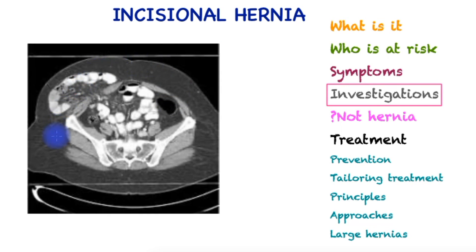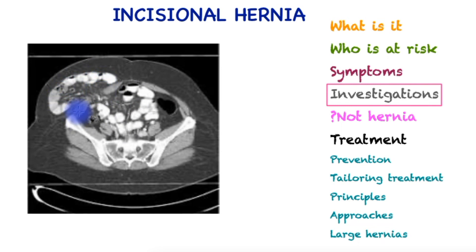The most useful investigation for larger hernias is a CT scan. It shows the size of the defect, the amount of abdominal contents now in the hernial sac — anything more than 20 to 30 percent causes a significant challenge — and it provides information about the quality of the abdominal wall, specifically the muscles, tendons, and details of previous repairs such as a mesh.